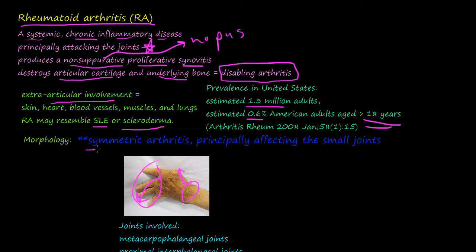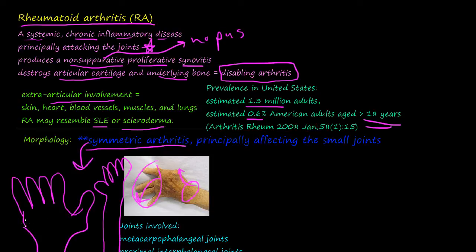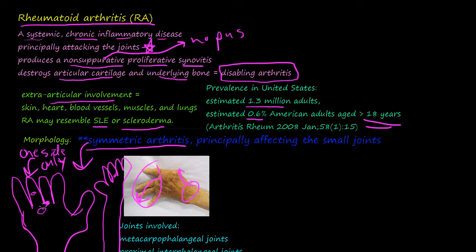The morphology shows symmetric arthritis, and symmetry is a big clue. Symmetric means it's on both hands — one side is the same as the other. If you have arthritis on one side only, it could be an infection or something else. But in the autoimmune case of rheumatoid arthritis, you see it in both hands. It's symmetrical, and it principally affects the small joints.